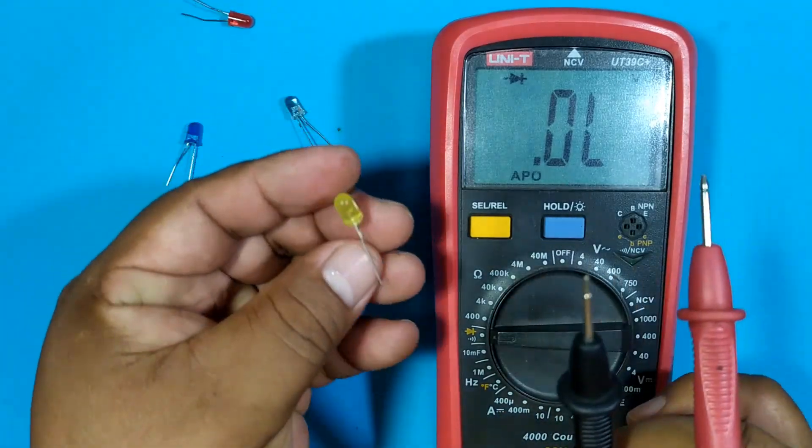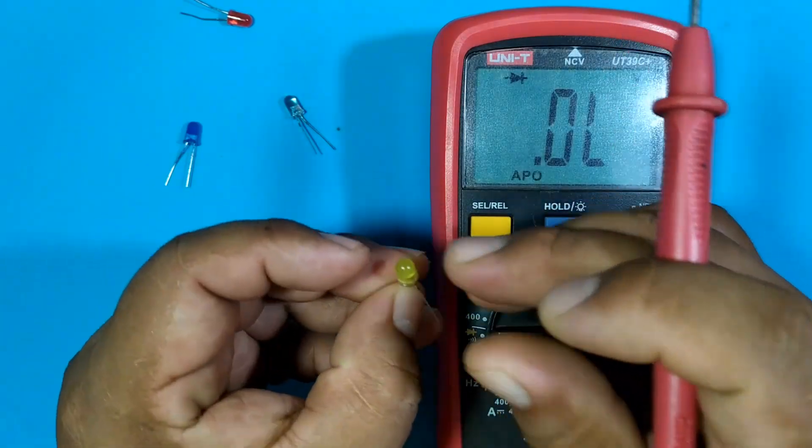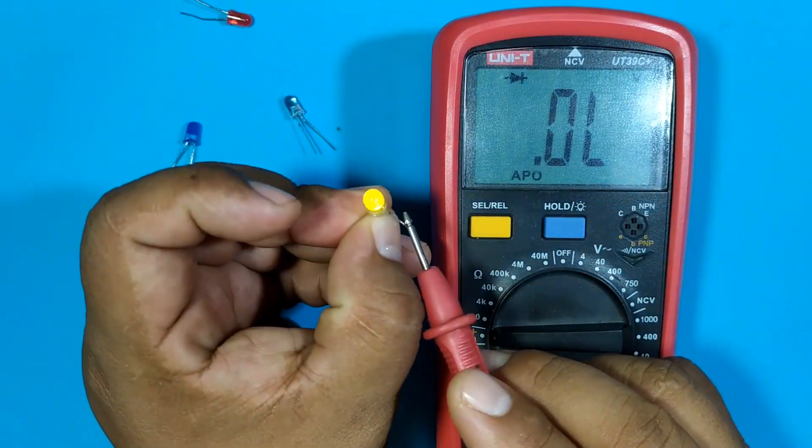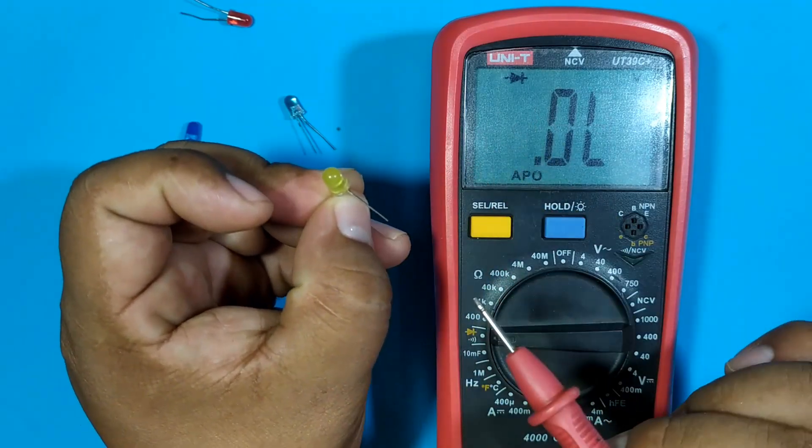Then the yellow one. 1.86. It is a little higher than the red one.